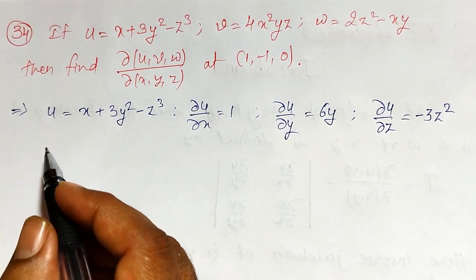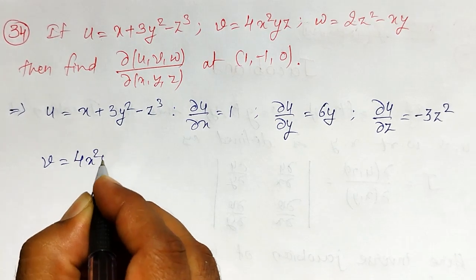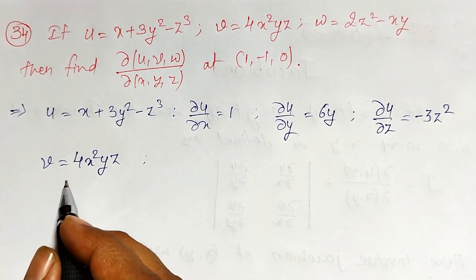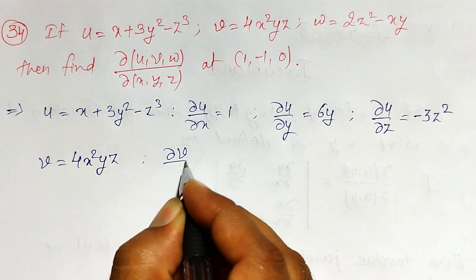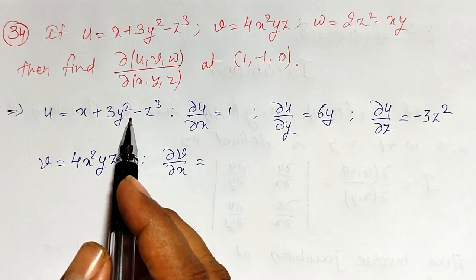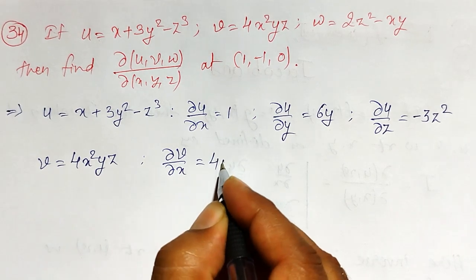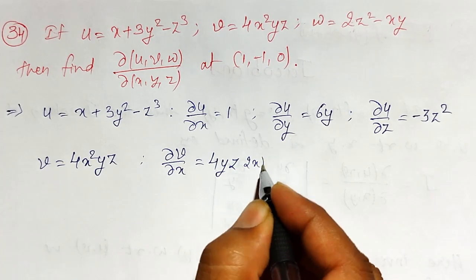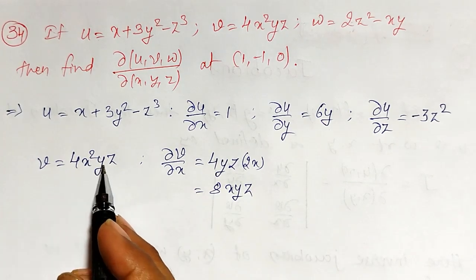Now let v equal to 4x squared yz. Since v is also a function of x, y, z, I'll find all three partial derivatives of v. For ∂v/∂x: here we have a product, so 4yz is constant and the derivative of x squared is 2x, giving ∂v/∂x = 8xyz.